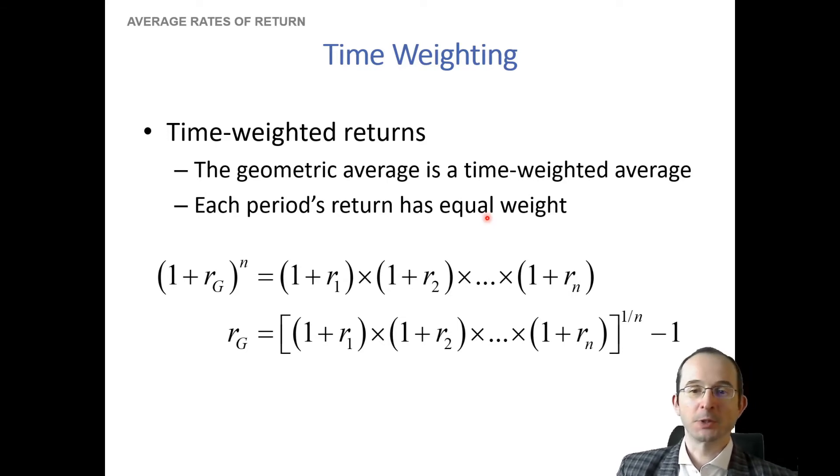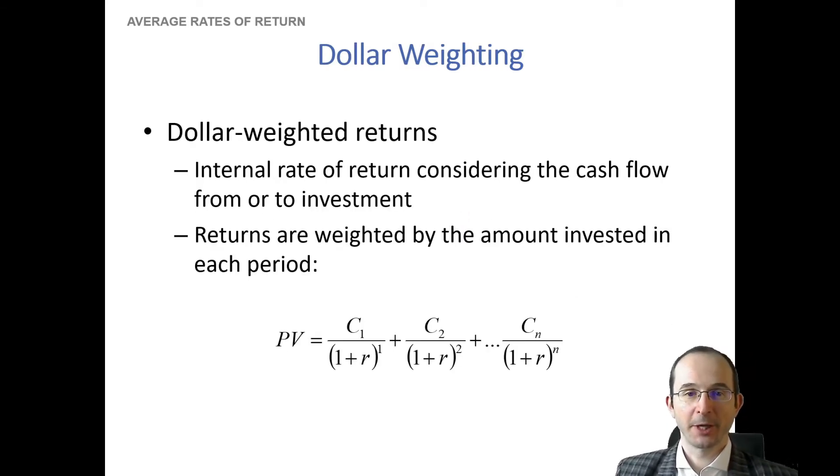You manage a certain amount of money in one year, you earn five percent. You manage perhaps a greater or lesser amount of money in another and you earn five percent. Then that five percent in both years receives the same weight. And that can be both good and bad. So let's contrast this with a measure that actually does exactly the opposite, weighting your returns by how much capital you're managing, which is dollar-weighted returns.